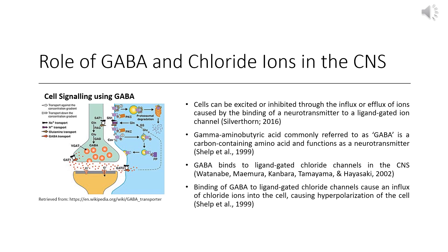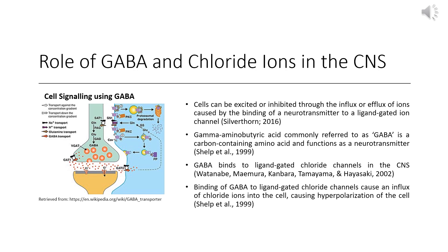This can be seen in the image to the left, with the channels being found on the post-synaptic neuron. The binding of GABA to ligand-gated chloride channels, unlike acetylcholine's effect on skeletal muscle, causes an influx of negatively charged chloride ions into the cell, causing hyperpolarization. This is why GABA is generally referred to as an inhibitory neurotransmitter in the central nervous system.